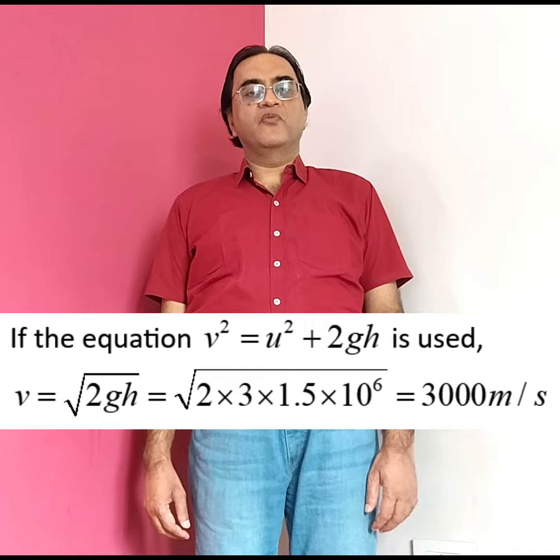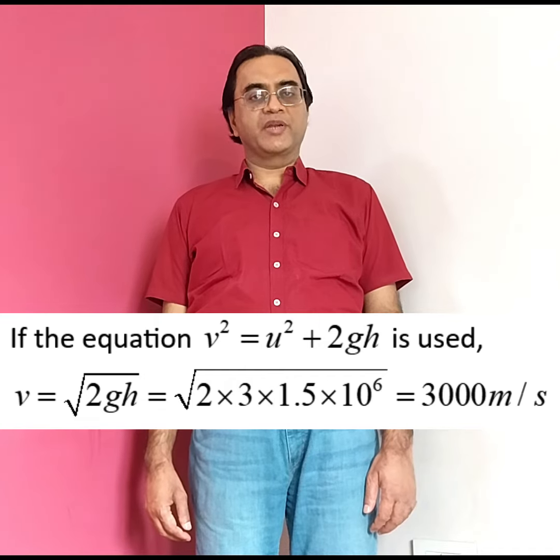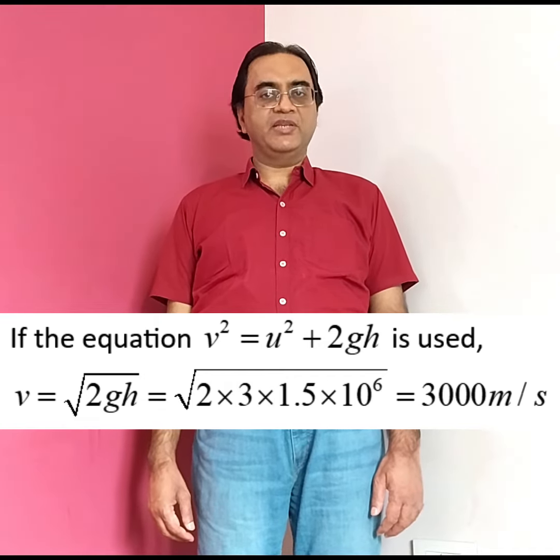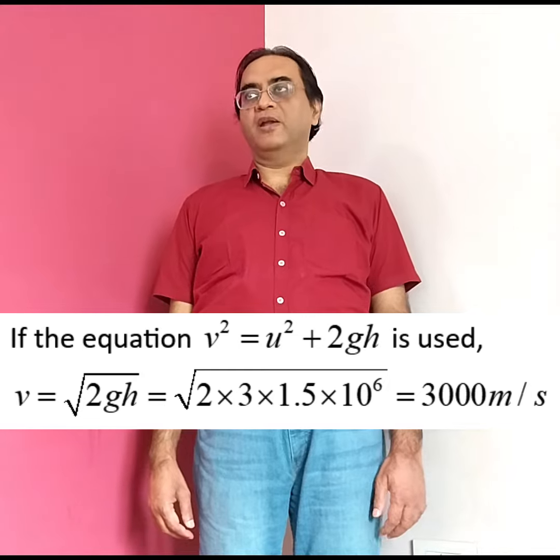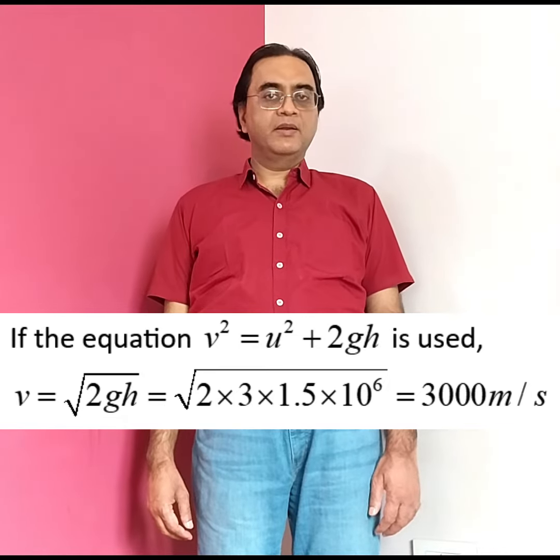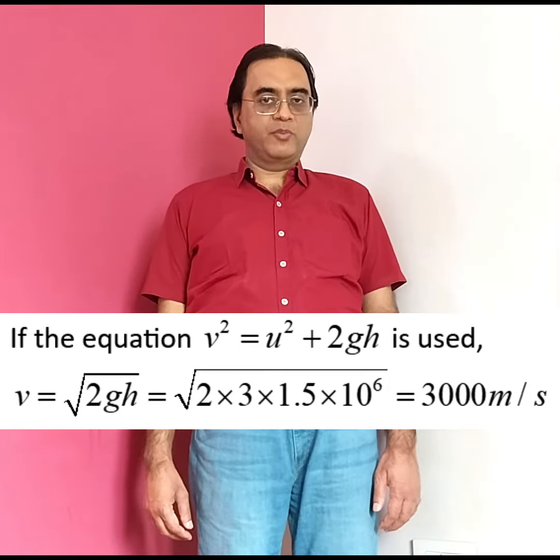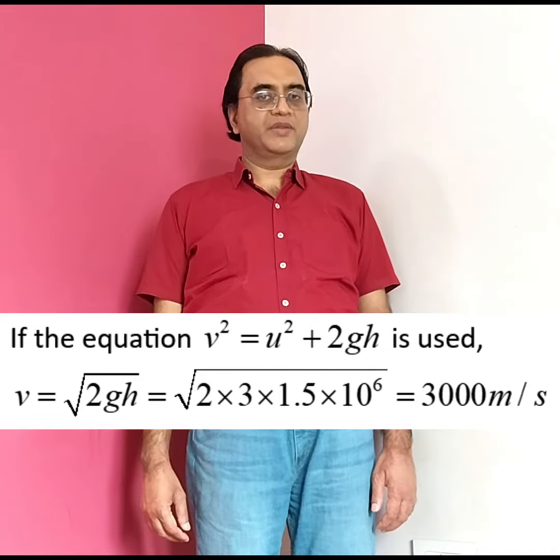Now, if the formula V squared equals U squared plus 2gh is used and values are plugged in, the speed comes out to be 3,000 meters per second.